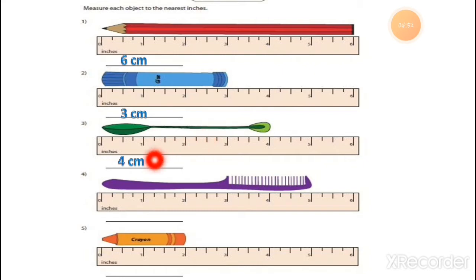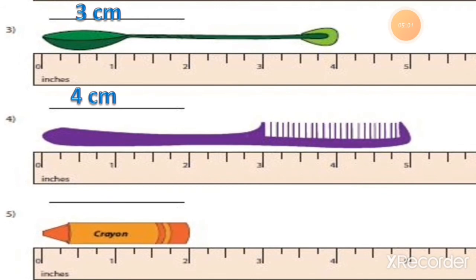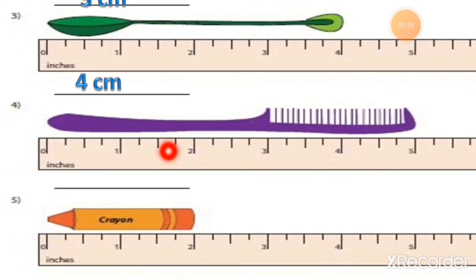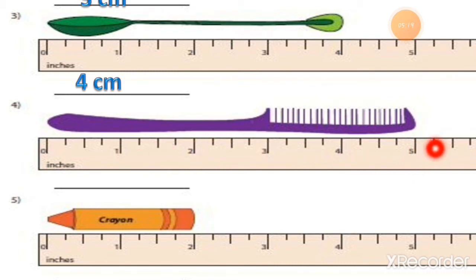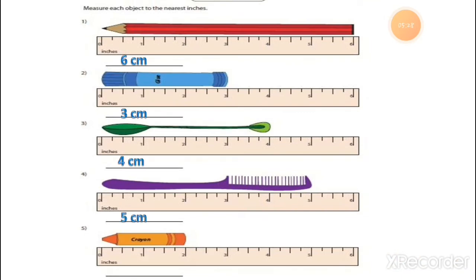Number 4 is a hair comb. We have to start measuring with the 0 number. You can see very clearly how long the comb is. The comb is 5 cm long. The length of the comb is 5 cm.